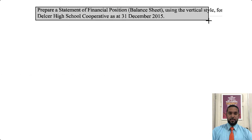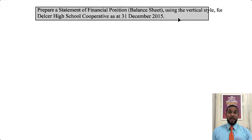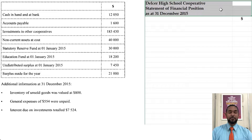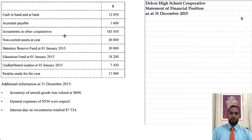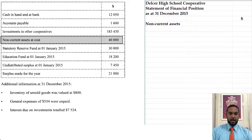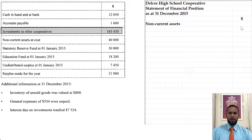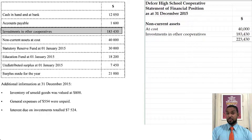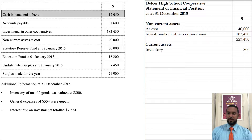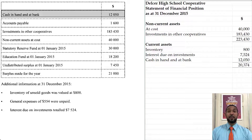Let's take a look at the next part of the question. They want us to prepare a statement of financial position — balance sheet — using a vertical style for Delca High School Cooperative as at 31st December 2015. CSEC has been moving away from the working capital format, so I'll use the single-column approach here. The first thing you should do is head up your financial statement — you get marks for that. So we start with non-current assets: $40,000 at cost, plus investments in other cooperatives of $183,430, giving a subtotal for non-current assets. Then current assets: inventory, interest due on investments, and cash in hand, giving a subtotal for current assets. Adding both subtotals gives total assets.